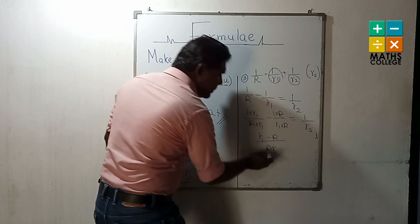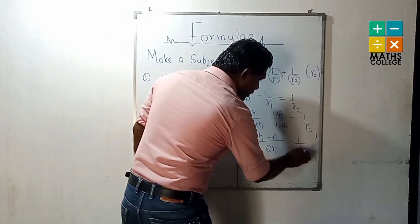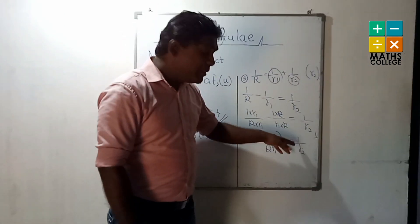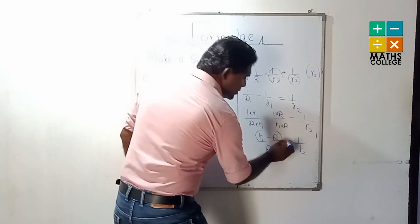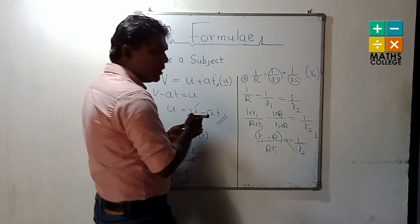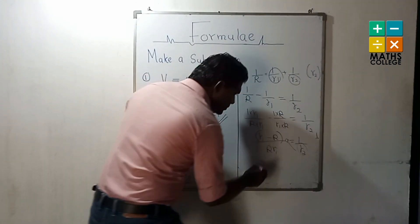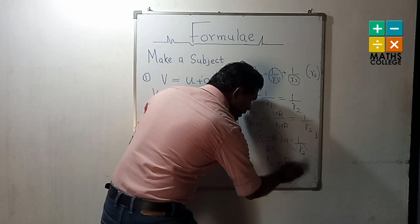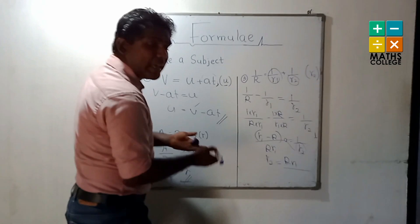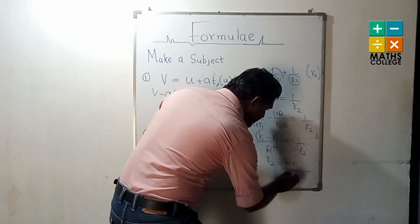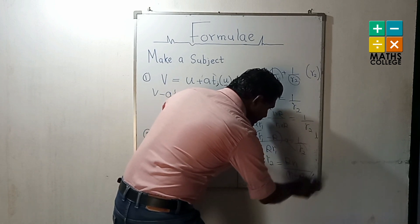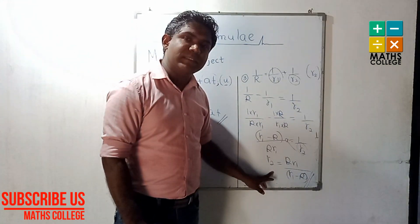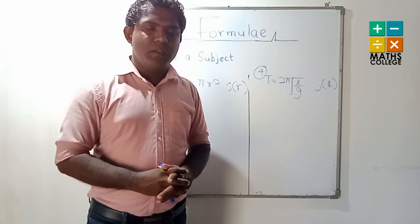Now denominators are the same. You can write: (R − R₁) over R₁ = 1/R₂. Now use cross multiplication — R₂ comes to the numerator on this side, and R₁ goes to the other side as numerator, so (R − R₁) goes to the right side as denominator. Therefore R₂ = R · R₁ / (R − R₁). Now we can see R₂ as the subject.